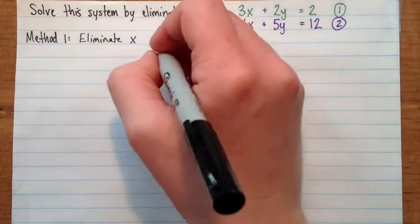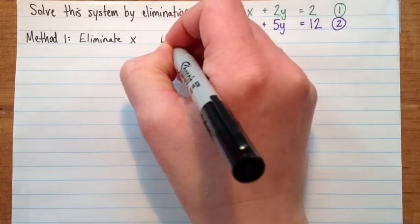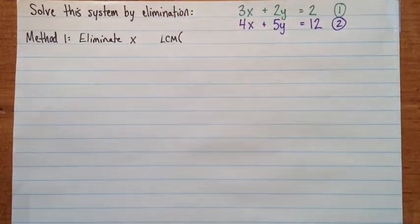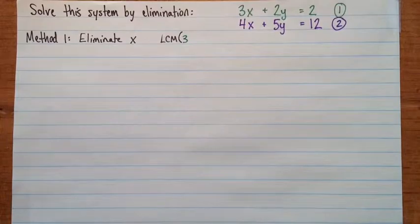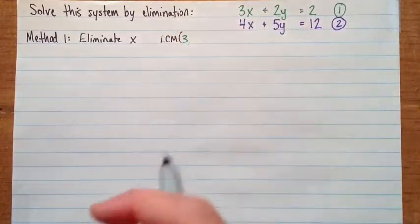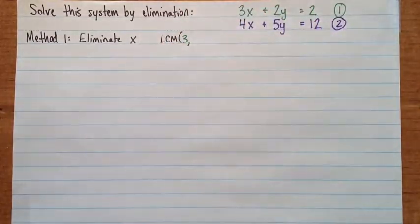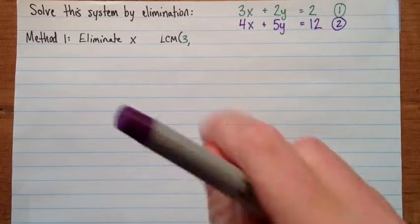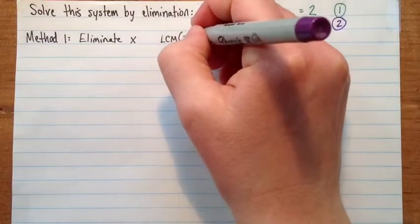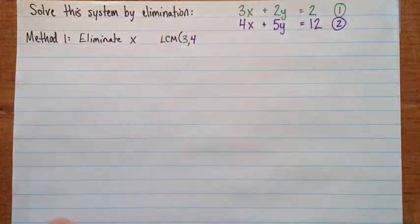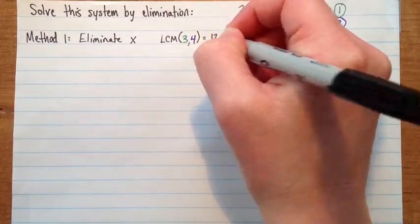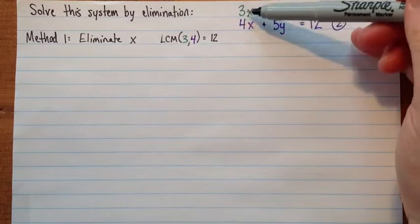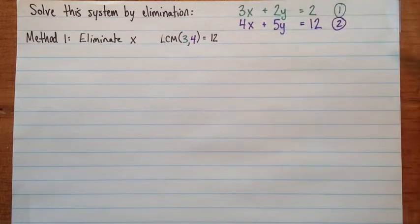So the easiest way to do that is to think, well, what's the lowest common multiple of the two coefficients on x. So the first is 3, and the second coefficient is the 4 from equation 2. So the lowest common multiple of 3 and 4 is 12. So that's what we're going to try to get both of the coefficients to be. We'll try to get them to be 12.